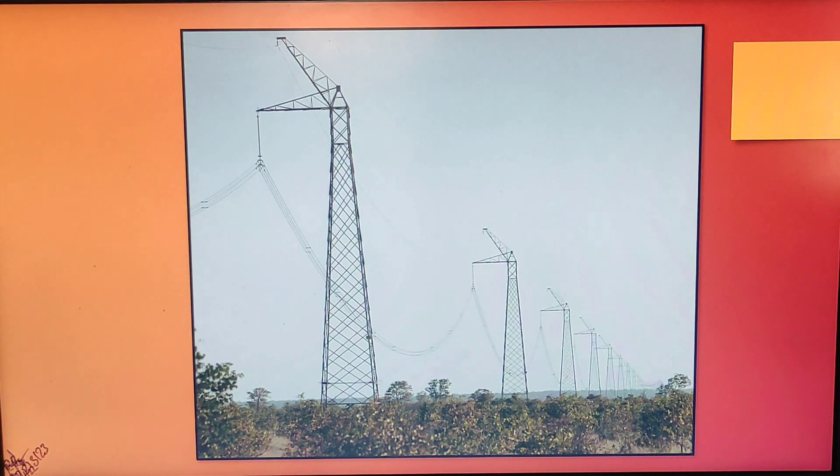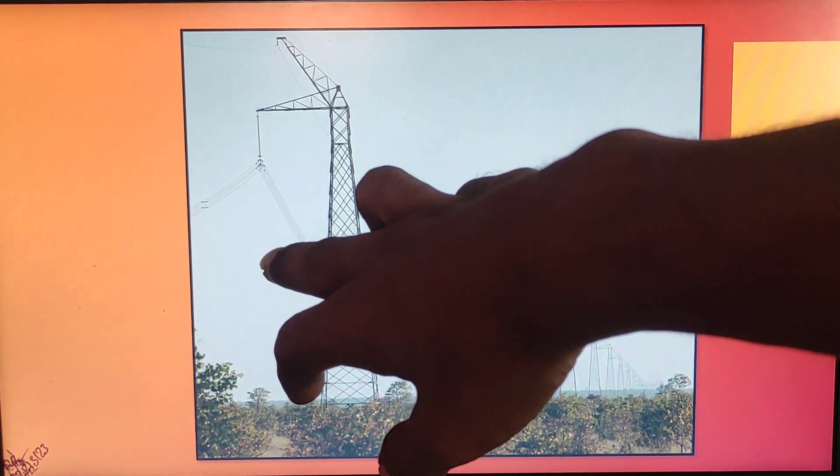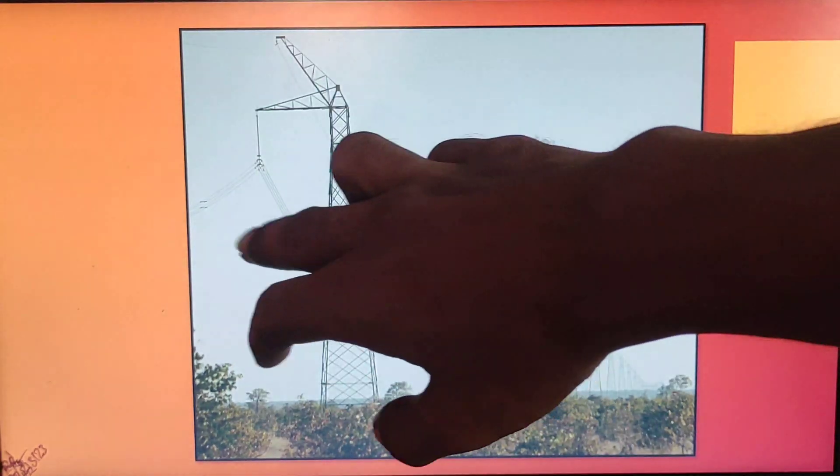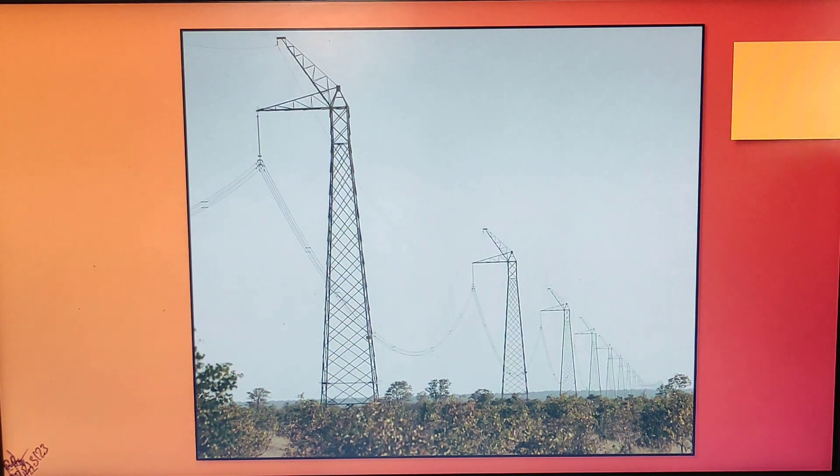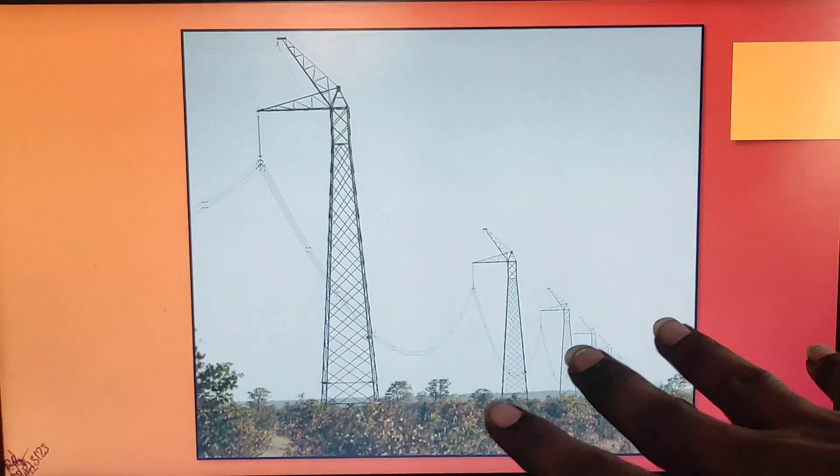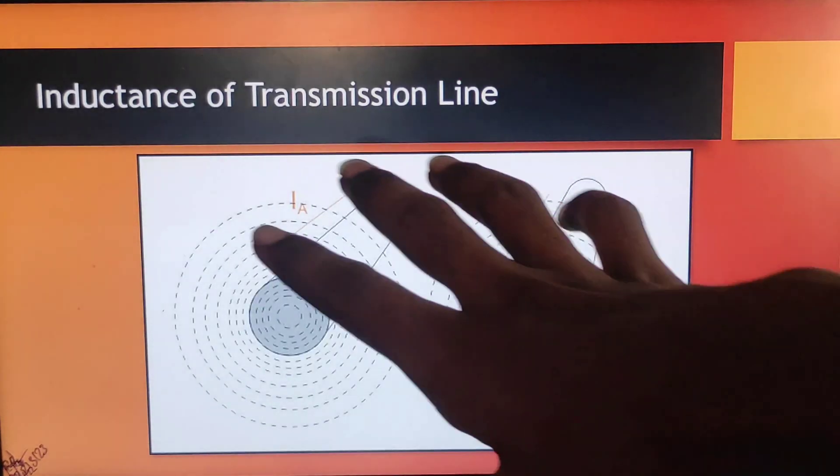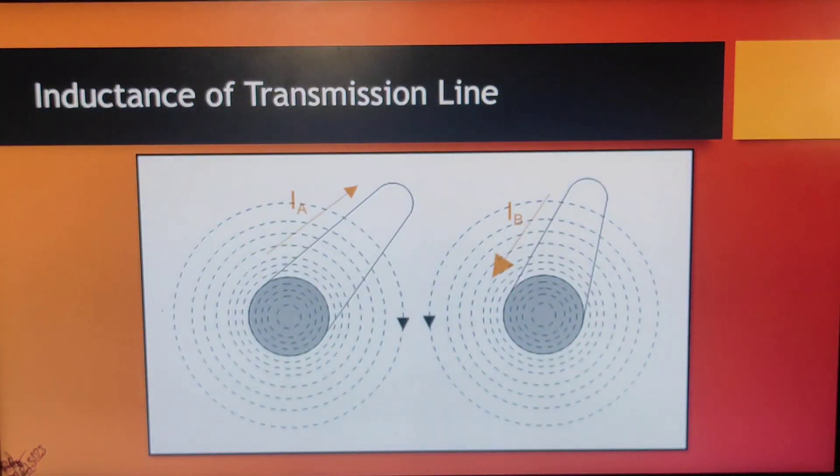Therefore, definitely, the magnitude of voltage and current will be very high. Due to that thing, the magnetic field that is produced around this conductor will be also very high. Because of the production of that magnetic field, definitely we will have some parameter like inductance.